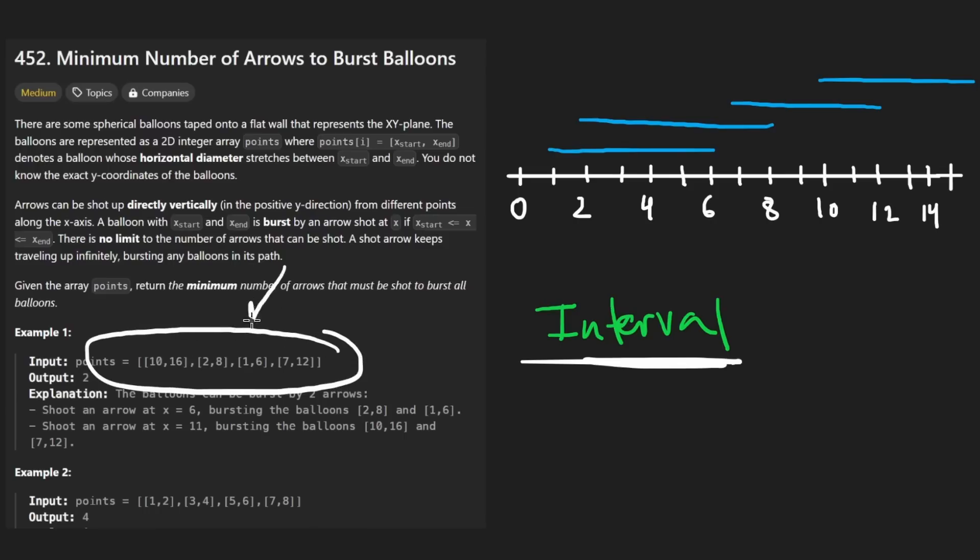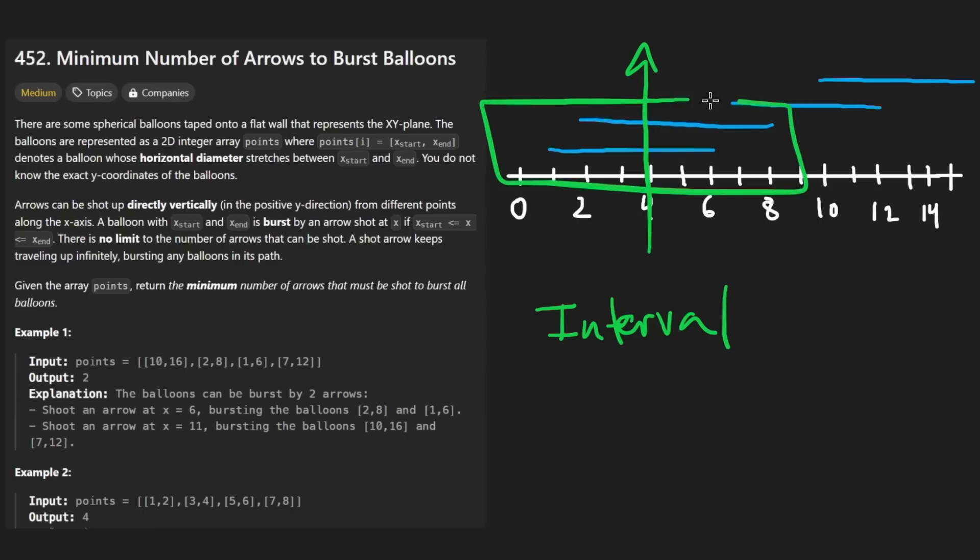The rule of thumb with interval problems is you almost always want to do some kind of sorting, which is some pre-processing that we're going to do on these intervals. And typically, it's fine to just sort them based on the start time. And that's what we're going to do in this case. So we're going to take these points that are given to us in a random order, and we're going to sort them because obviously you want to be able to identify, in this case, when we're talking about popping multiple balloons with a single arrow, you want to be able to identify overlapping intervals. If you want to find overlapping intervals, it makes sense to order them in such a way that they're going to be overlapping. That's why we do the sorting.